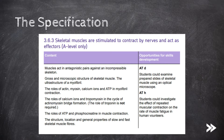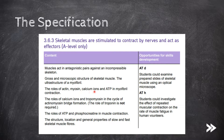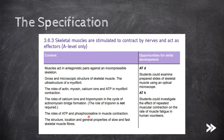As always, let's start with a look at our specification. First of all, we need to know that muscles act in antagonistic pairs against an incompressible skeleton. We also need to know the gross and microscopic structure of skeletal muscle, including the ultra-structure of a myofibril. Then we need to know the roles of actin, myosin, calcium ions, and ATP in myofibril contraction. We also need to know the roles of calcium ions and tropomyosin in the cycle of actinomyosin bridge formation. Note that knowledge about the role of troponin is not required. We also need to know the roles of ATP and phosphocreatine in muscle contraction. And finally, we need to know the structure, location, and general properties of slow and fast skeletal muscle fibres.